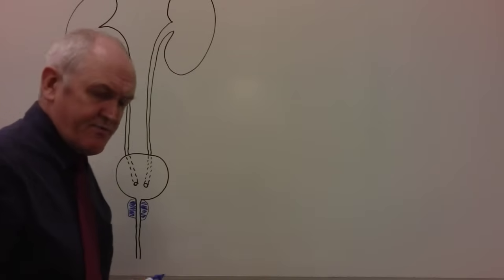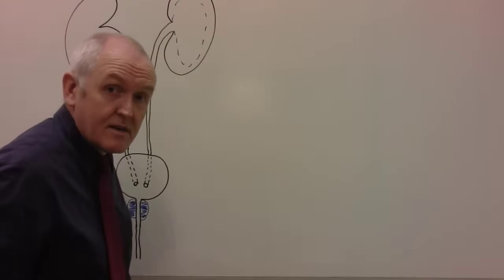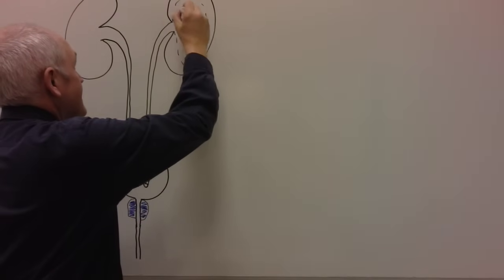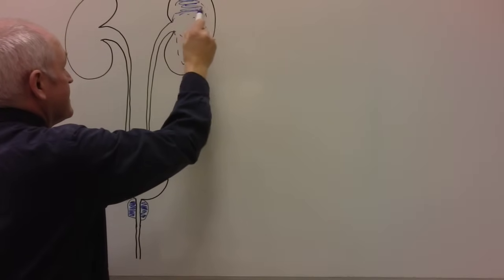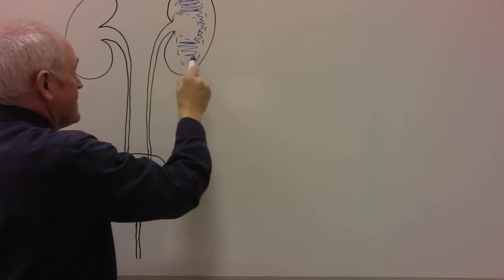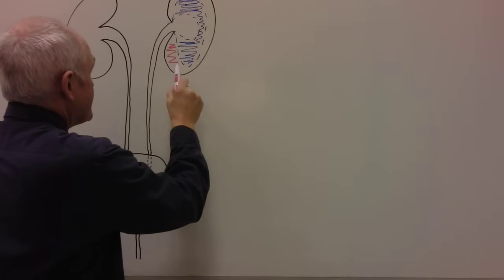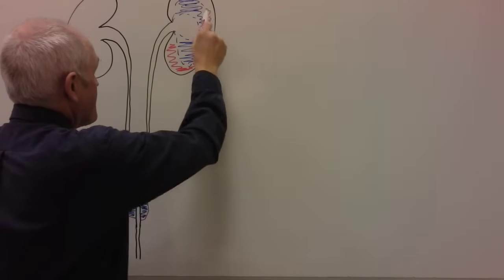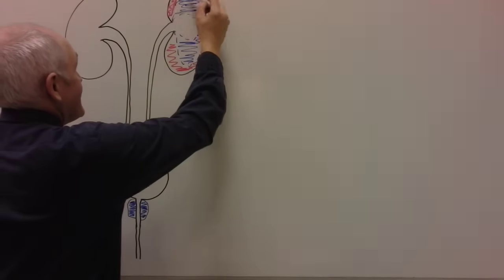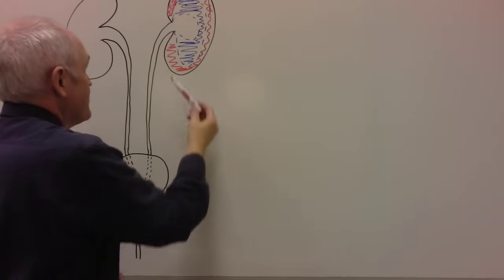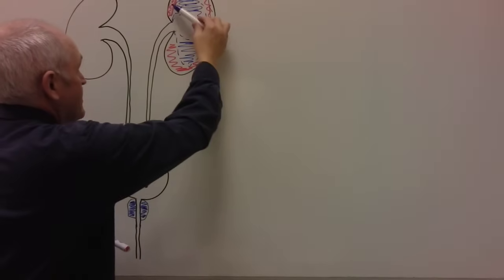The kidneys are basically in three layers. The outer layer is the cortex and there's an inner layer — the medulla. And because this is to do with the kidneys, everything is described as renal, so this would be the renal cortex and this would be the renal medulla.